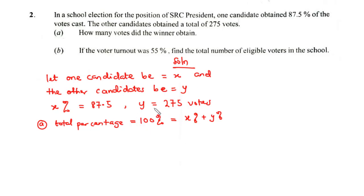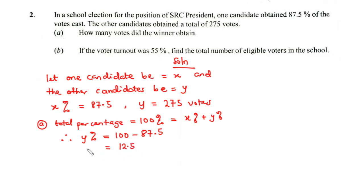We know the total percentage is 100% and X% is 87.5%, so we can find Y%. Therefore, Y% = 100% − 87.5% = 12.5%. So Y% equals 12.5%, and this 12.5% corresponds to 275 votes.